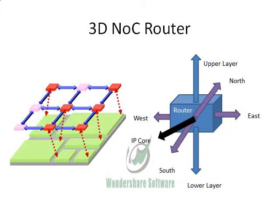The figure represents the three-dimensional network on chip router. Each router has seven input-output ports: one goes to the east direction, another to the west, followed by north, south, upper layer, lower layer, and one to the IP core itself. We have to eliminate any unused links that have no connection in order to reduce the power consumption.